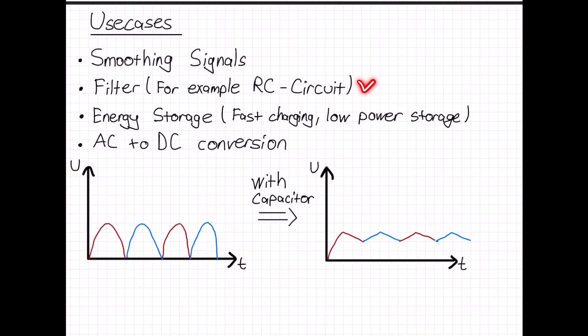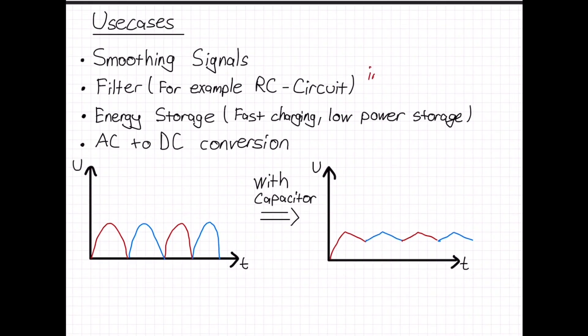smoothing signals, filter, for example RC circuits. For example, in radios they use RC circuits. Energy storage - fast charging but low power storage. It's the difference between capacitor and a battery. And AC to DC conversion.